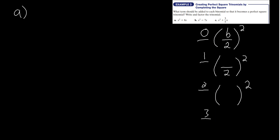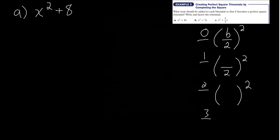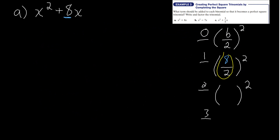Looking at part a: x squared plus 8x. Recall that in a quadratic equation, b is the constant in front of the x. My b value here is 8. Step 1: write 8. Step 2: 8 divided by 2 is 4. Step 3: 4 squared is 16. This tells me that I need to add 16 to make this a perfect square trinomial — we need to be able to factor the equation, and adding 16 enables that.